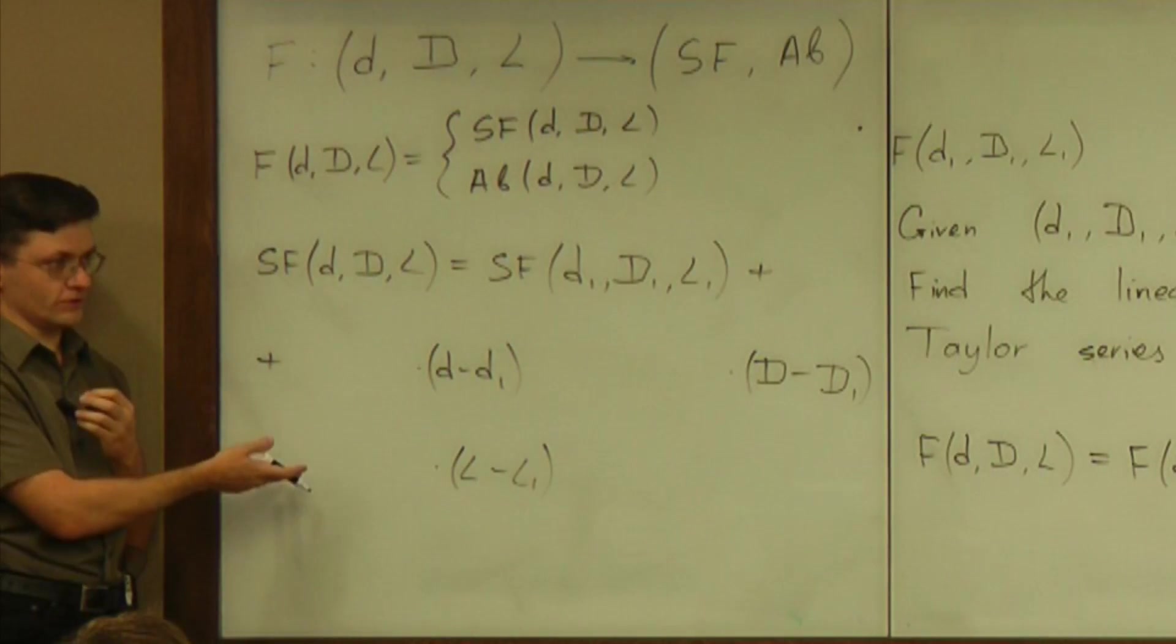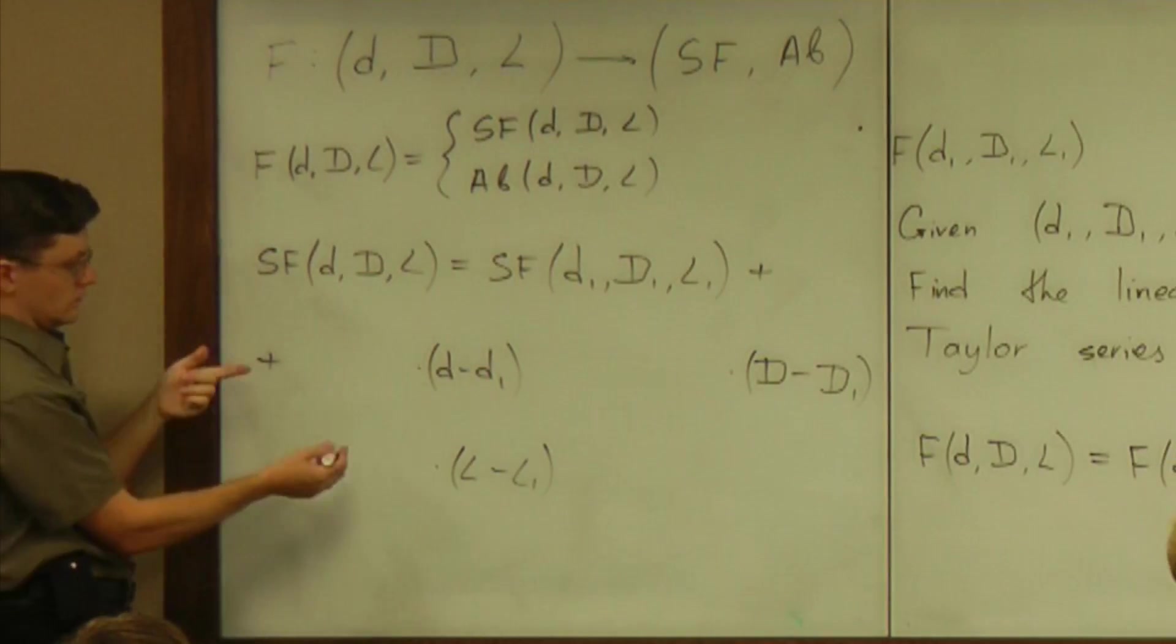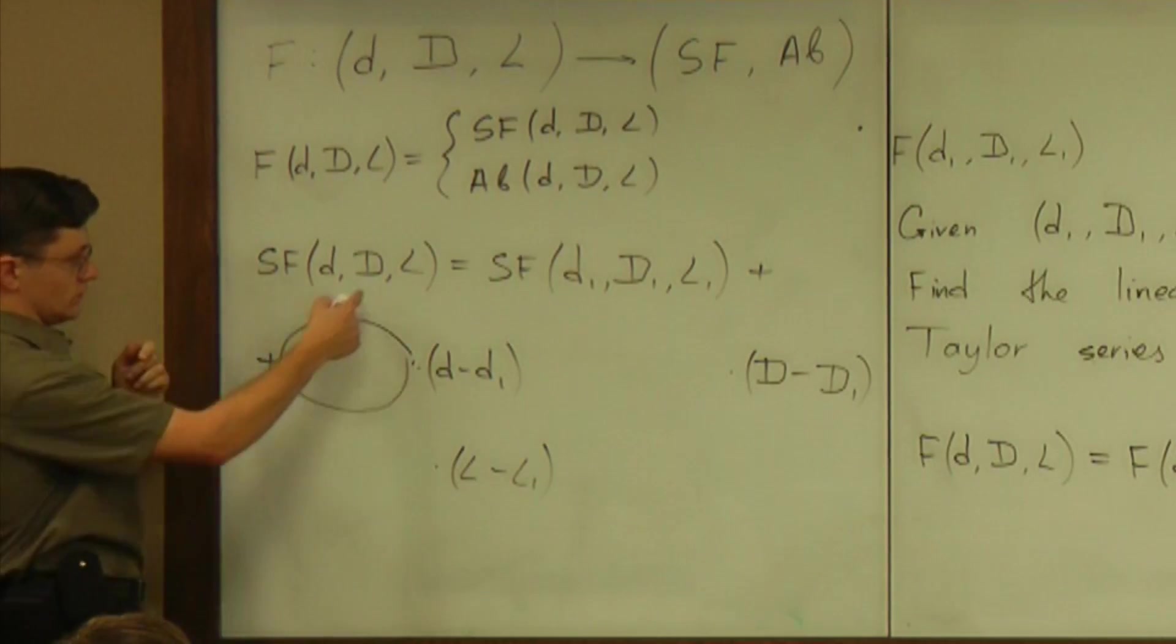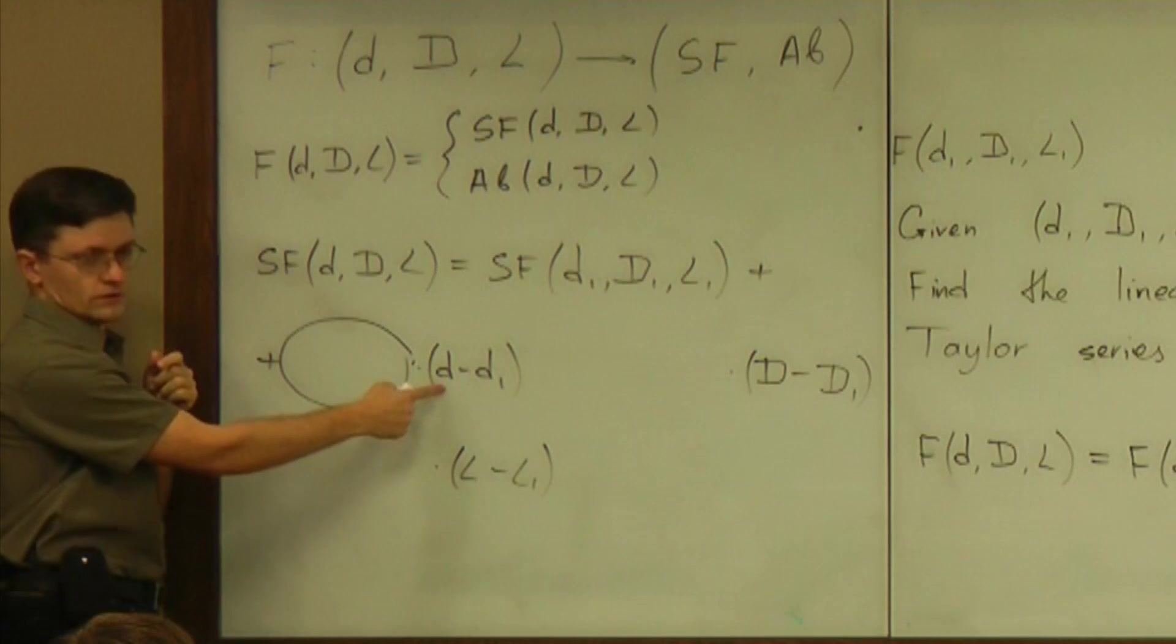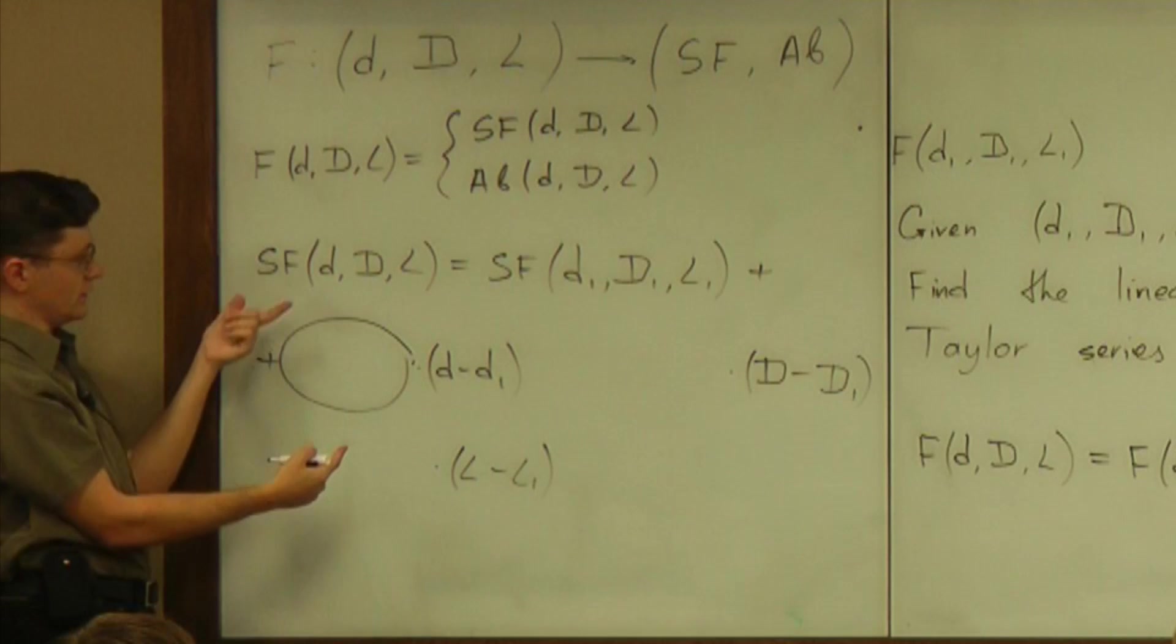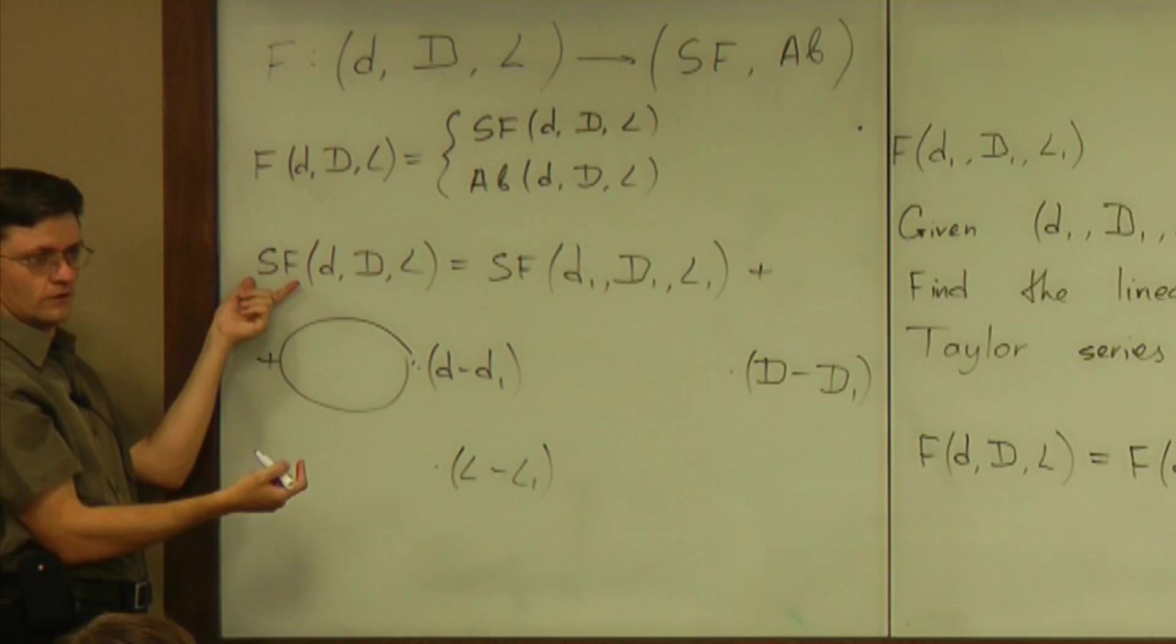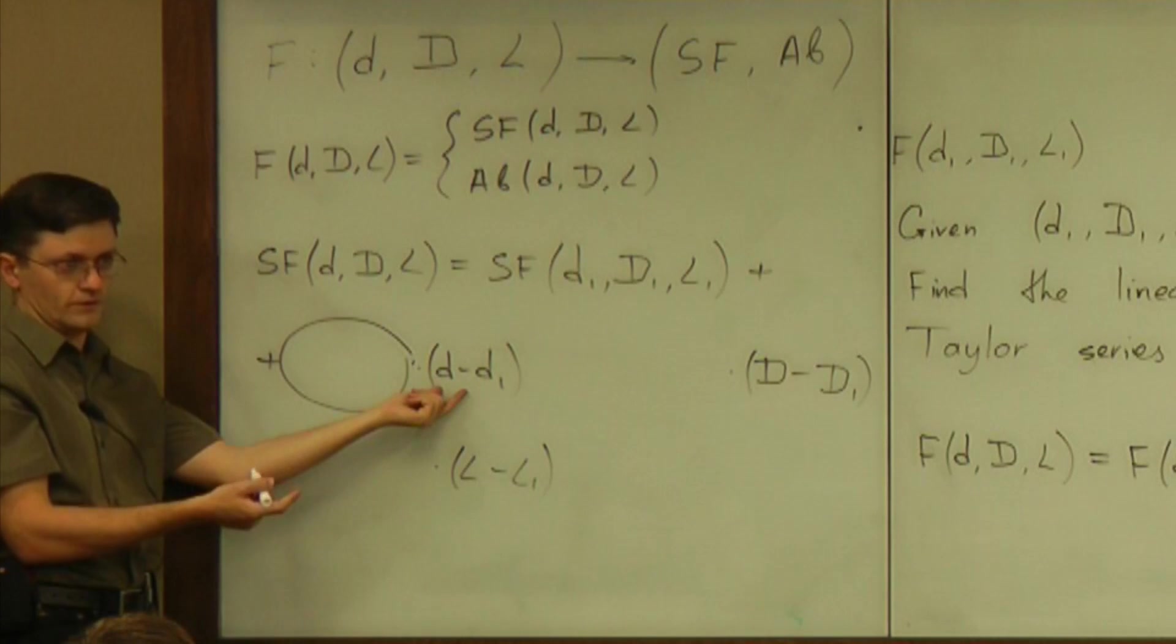Don't you believe those must be partial derivatives? Because when you look at this equation, what's the meaning of this coefficient? It's the rate of change of the function SF with respect to D. That's exactly what it is. If you pretend SF depends on D linearly, then the coefficient is the rate of change. And that rate of change is the derivative of this number with respect to that number. And everybody knows what it is.